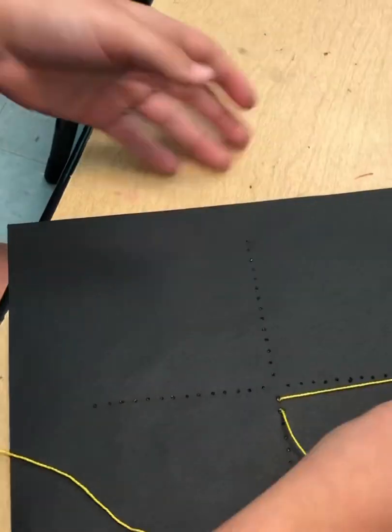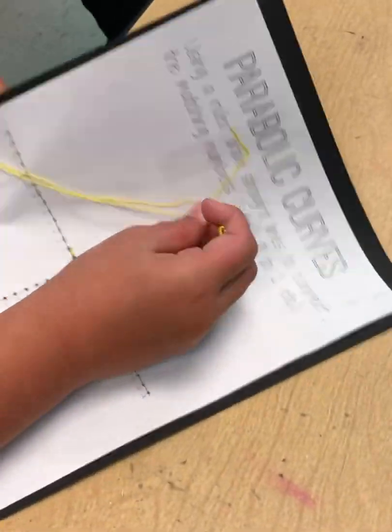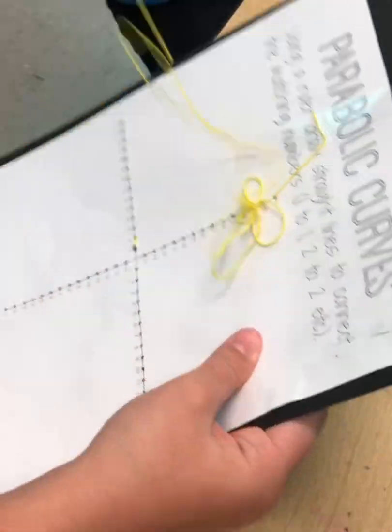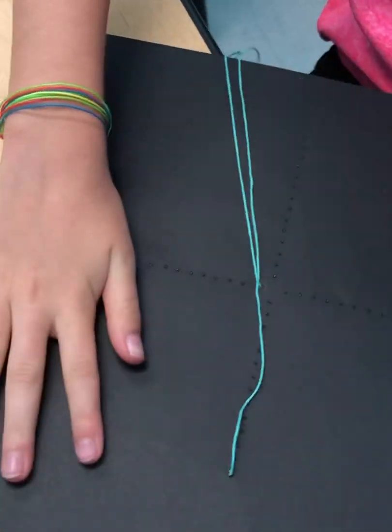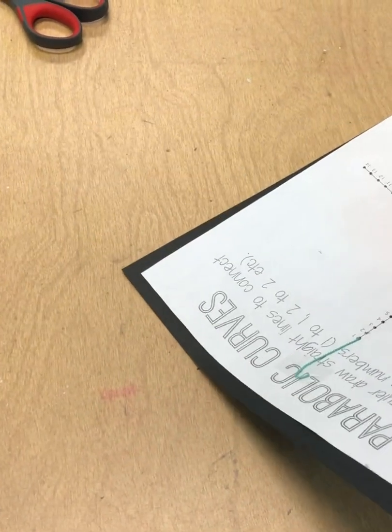So we're securing the end, and the students have already been taught how to do the sewing technique. They know that on the white side of the paper, they're going to be stitching, and on the black side of the paper, they're going to be going across to the opposite axis.